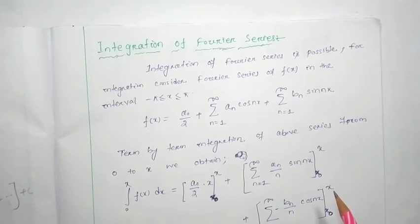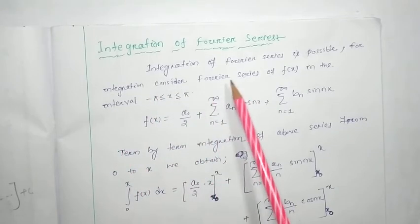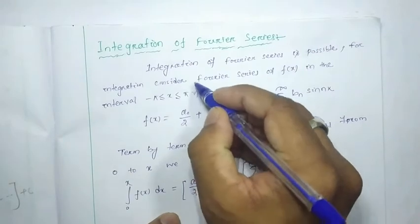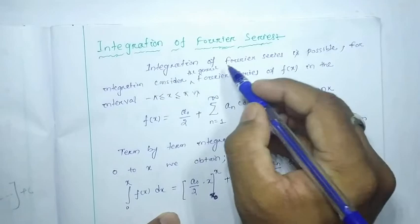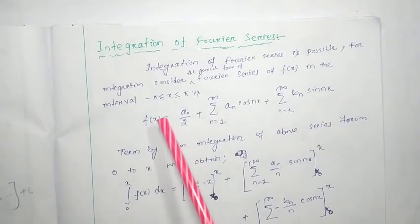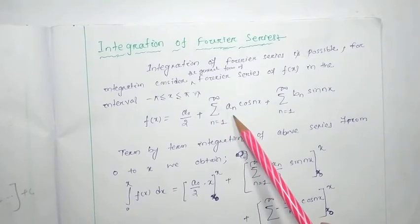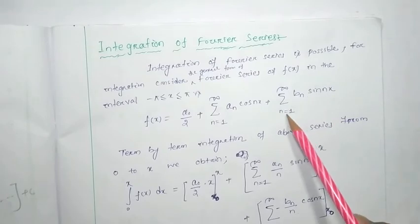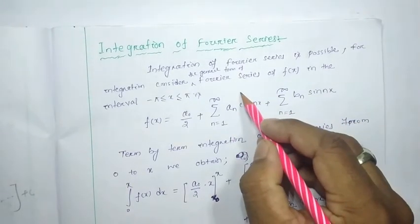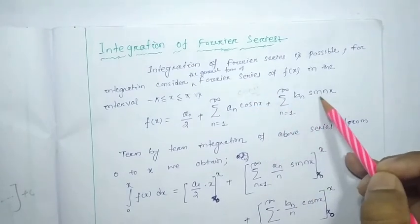As with differentiation of Fourier series, integration of Fourier series is also possible. Consider the general form of Fourier series of f(x) in the interval minus pi to pi: f(x) = a₀/2 plus summation from n=1 to infinity of aₙ cos(nx) plus summation from n=1 to infinity of bₙ sin(nx). Here l is nothing but pi, so it automatically becomes cos(nx) and sin(nx).